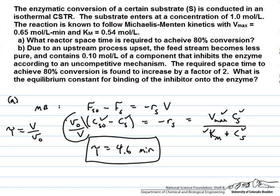Alright, the required space time to achieve 80% conversion is found to increase by a factor of 2, so now our new space time is going to be equal to 9.2 minutes, so it takes double the amount of time. We are going to use that to solve for the equilibrium constant for binding of the inhibitor onto the enzyme.